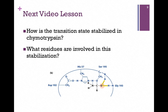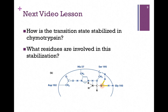In our next lesson, we want to look at how chymotrypsin is able to stabilize these transition state intermediates — those tetrahedral carbonyl carbon intermediates — and we'll see the residues that are involved in that stabilization.